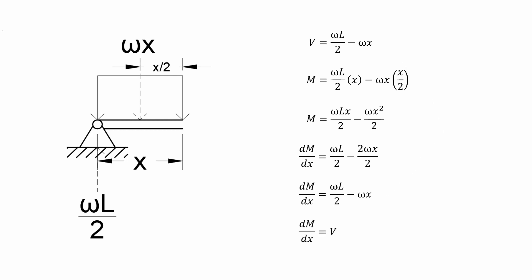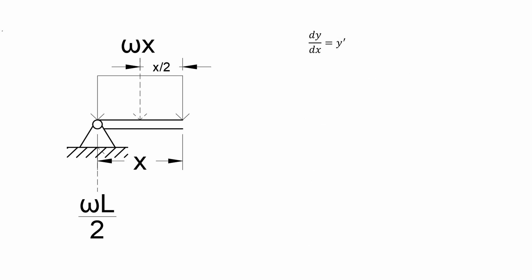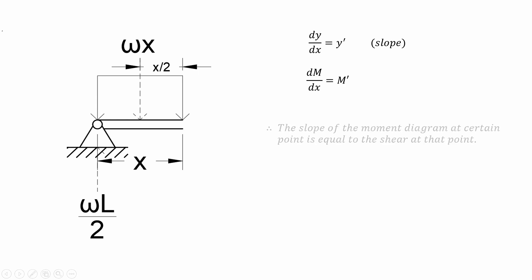Thus, dM over dx is equal to V. In calculus, we learn that dy over dx is equal to y prime, or the slope of a line at a certain point. In this case, dM over dx is equal to M prime, or the slope of the moment diagram at a certain point. Therefore, we can conclude that the slope of the moment diagram at a certain point is equal to the shear at that point. That's rule number 1.